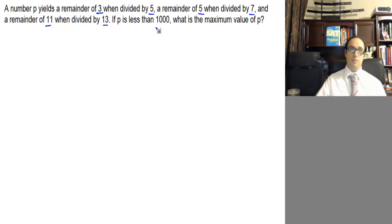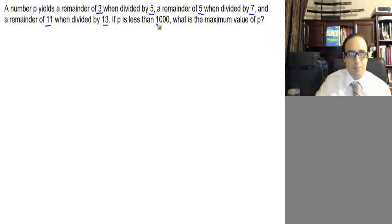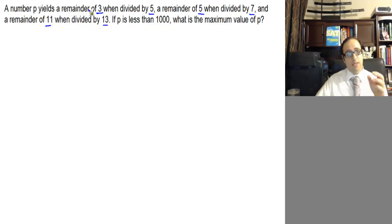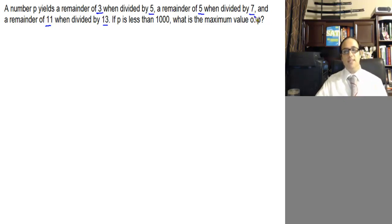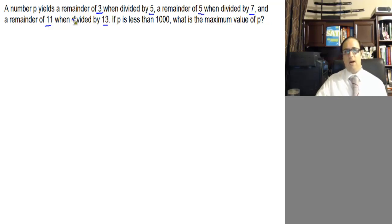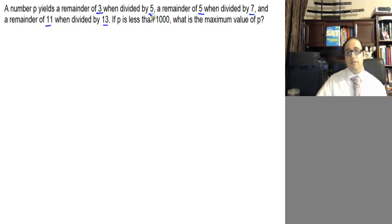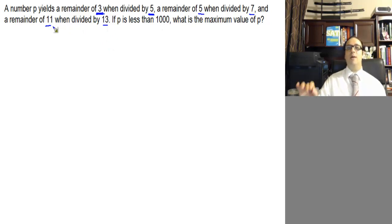So what do we do? We look at the numbers given and the relationships between them, trying to find a trick or hint. When this number is divided by 5 the remainder is 3, by 7 the remainder is 5, by 13 the remainder is 11. Notice that the difference between the divisor and the remainder is always 2: 5 minus 3 is 2, 7 minus 5 is 2, 13 minus 11 is 2. That must mean something.